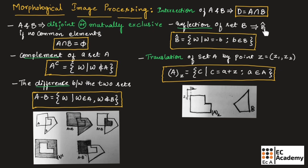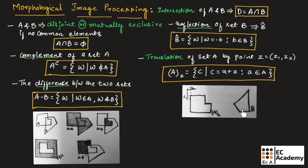The reflection of set B is represented as B̂ = {w | w = -b, where b belongs to B}. The translation of set A by point z = (z1, z2) is represented as (A)_z = {c | c = a + z, where a belongs to A}. As shown in the figure, the reflection of set B produces a mirrored form of the original set.